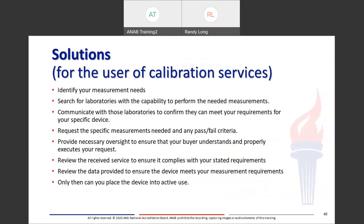Some solutions for the users of calibration services: it's best to identify your measurement needs, search for laboratories with the capability to perform the needed measurements, and communicate with those laboratories to confirm they can meet your requirements for your specific device. Request the specific measurements needed and any pass/fail criteria. Provide necessary oversight to ensure your buyer understands and properly executes your request. Once done, review the received service to ensure it complies with your stated requirements, then review the data provided to ensure the device meets your measurement requirements. Only then can you place that device into active use.